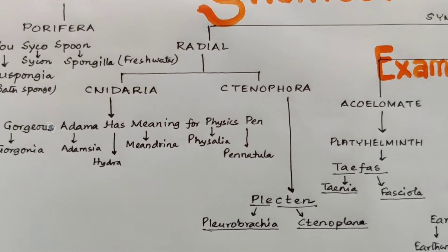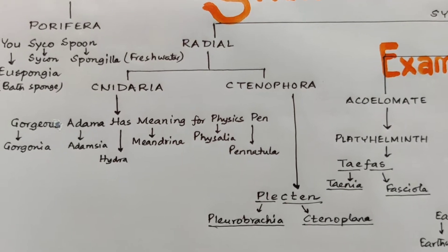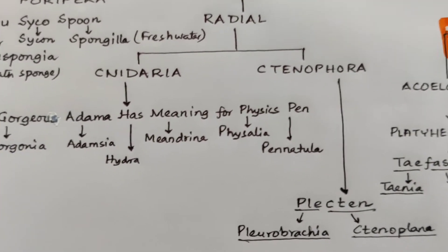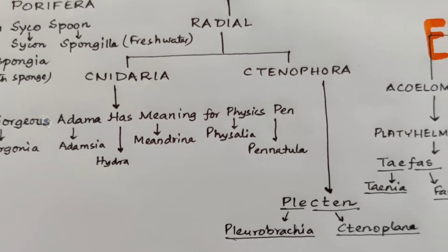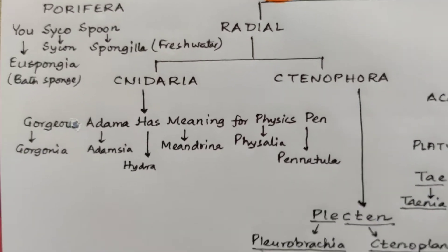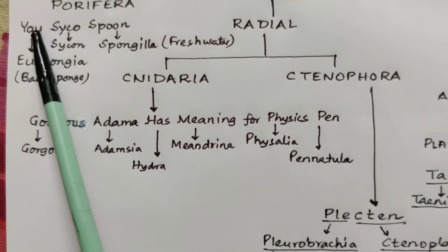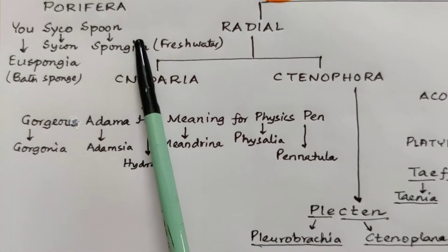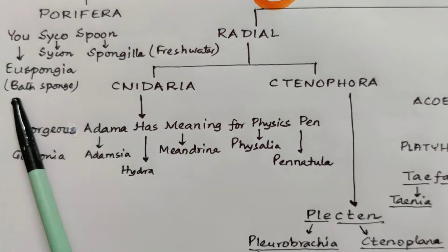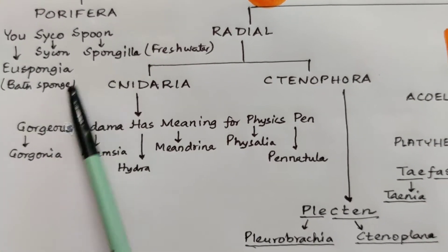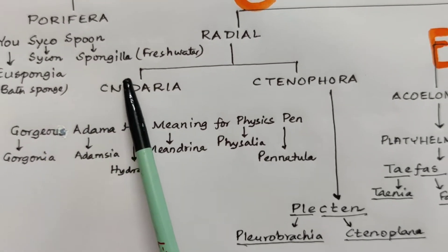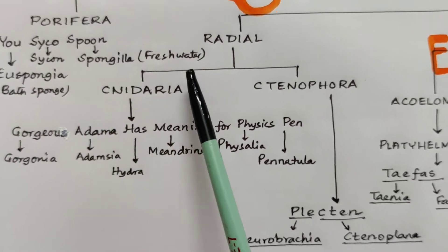In order to remember the names of the examples in Porifera, you only have to remember this shortcut: 'You, Psycho, Spoon.' 'You' means Euspongia, which is the scientific name of bath sponge. 'Psycho' is Sycon, and 'Spoon' is Spongilla — that is freshwater sponge.